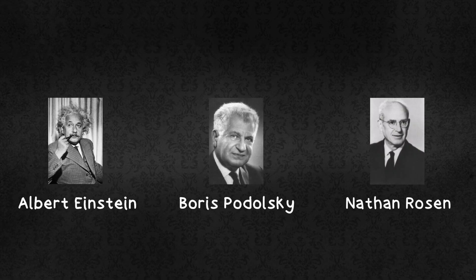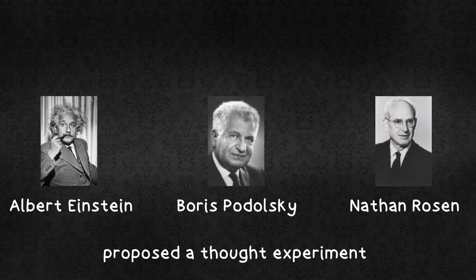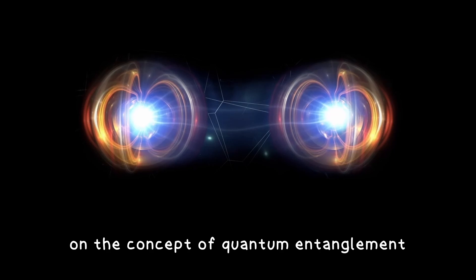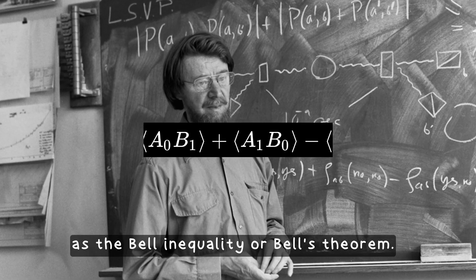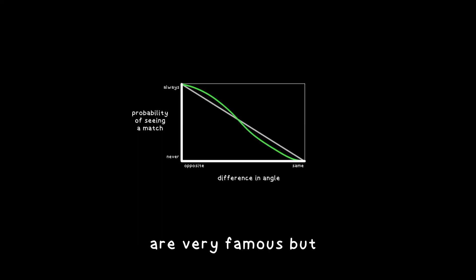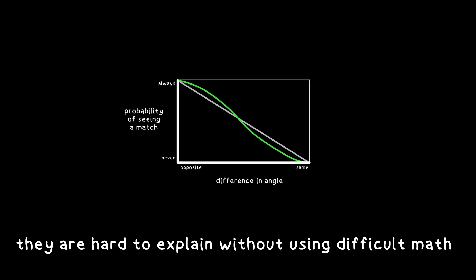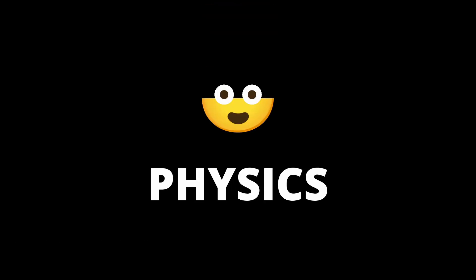Albert Einstein, Boris Podolsky and Nathan Rosen proposed a thought experiment on the concept of quantum entanglement. This led John Stewart Bell to find what we know today as the Bell Inequality or Bell's theorem. The Bell Inequality and Bell's theorem are very famous but they are hard to explain without using difficult math. This is physics made simple.